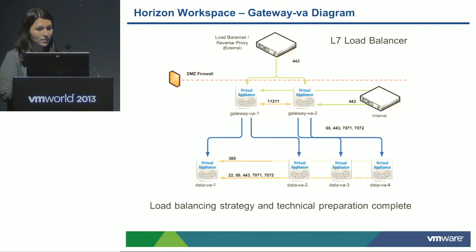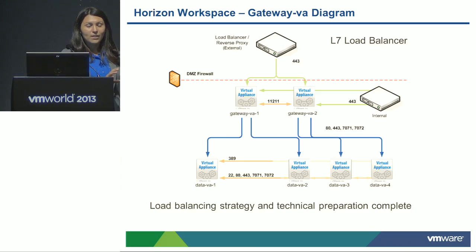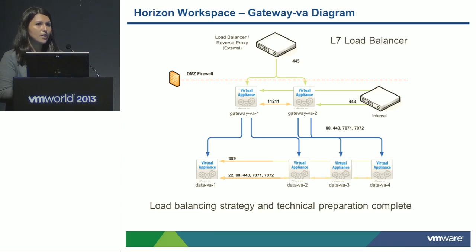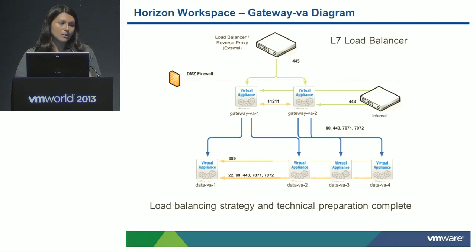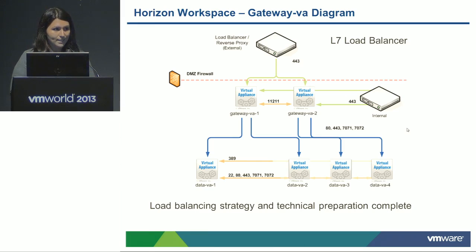One gotcha: for the Gateway VA of Horizon Workspace, you must have a reverse proxy set up in order to link it with Horizon Workspace — it is not supported to put your Horizon Gateway VA in your DMZ. The Gateway VA routes all critical information, so you don't want to expose it as this could create security holes. This slide also shows how you'd scale workspace for multiple users with multiple Gateway VAs, but overall make sure your load balancing is set up correctly to route properly.